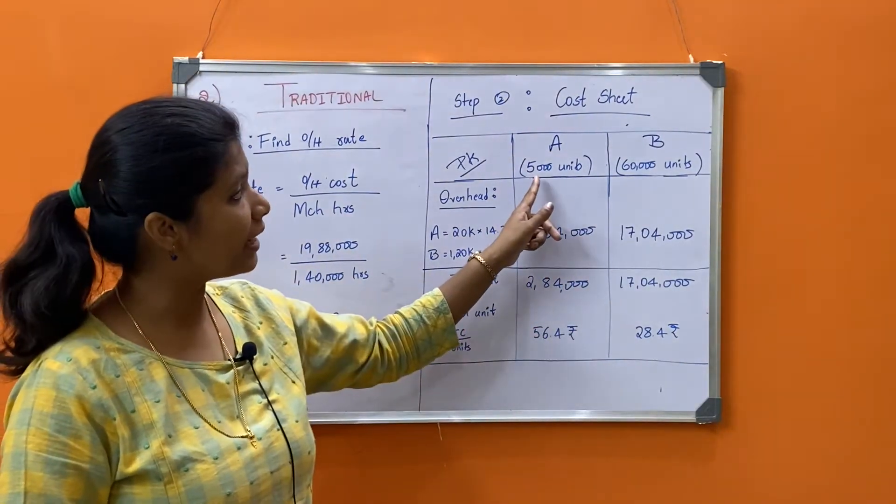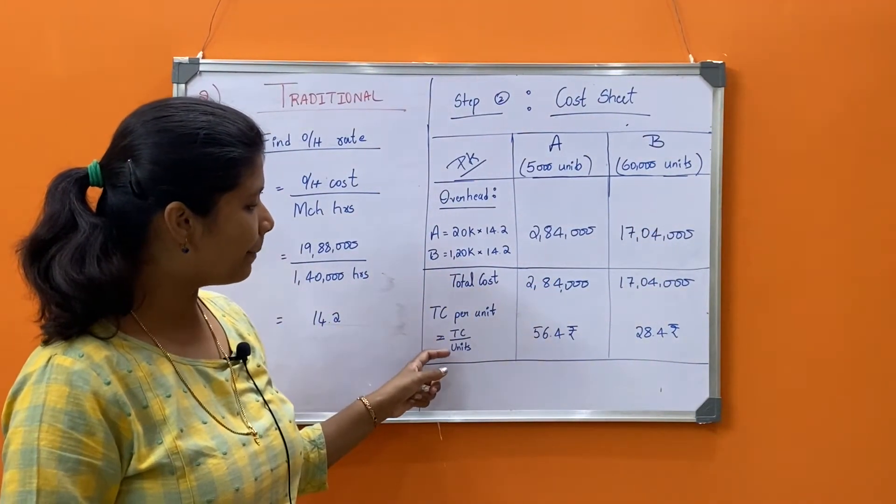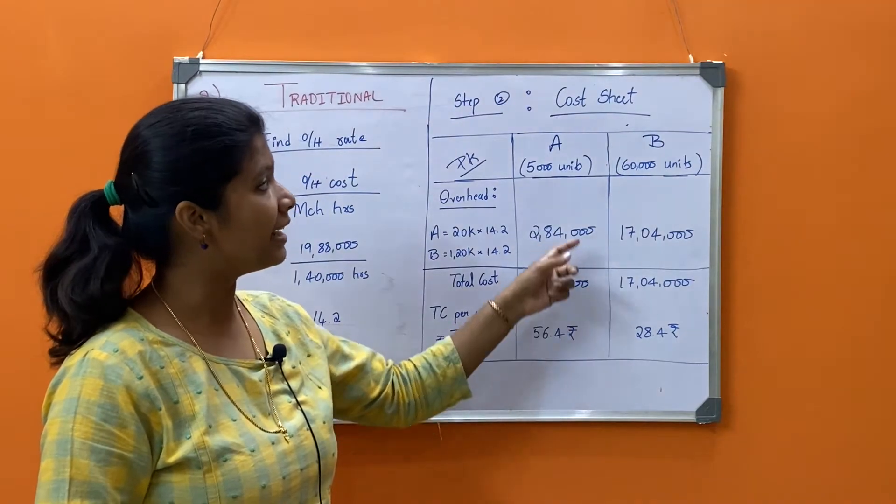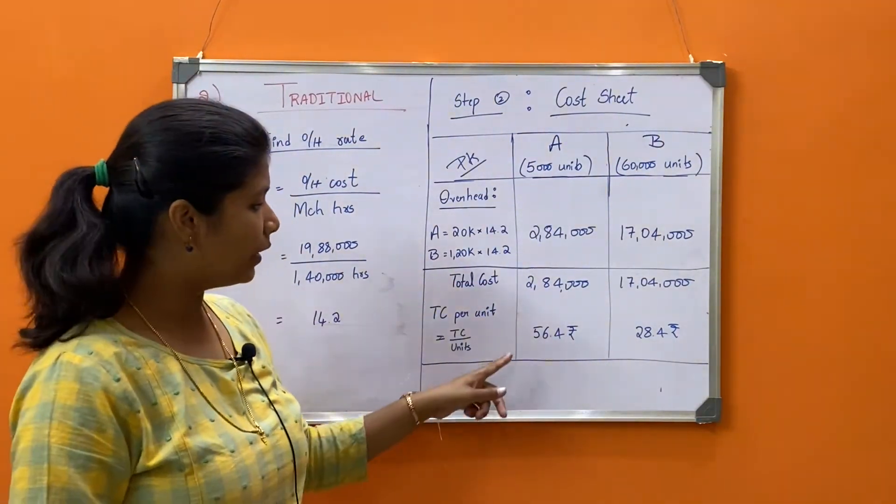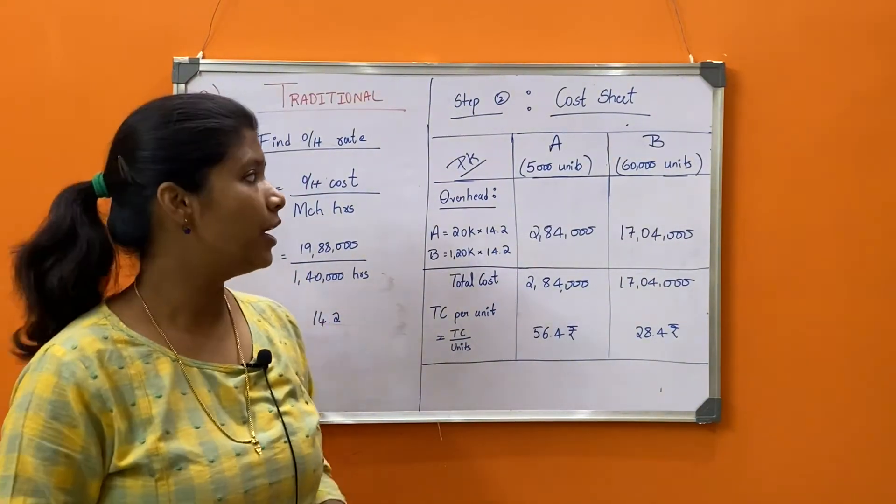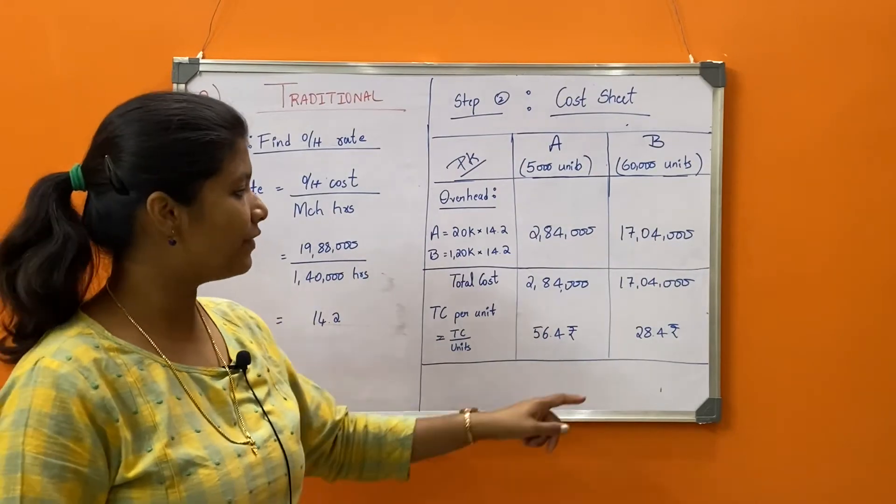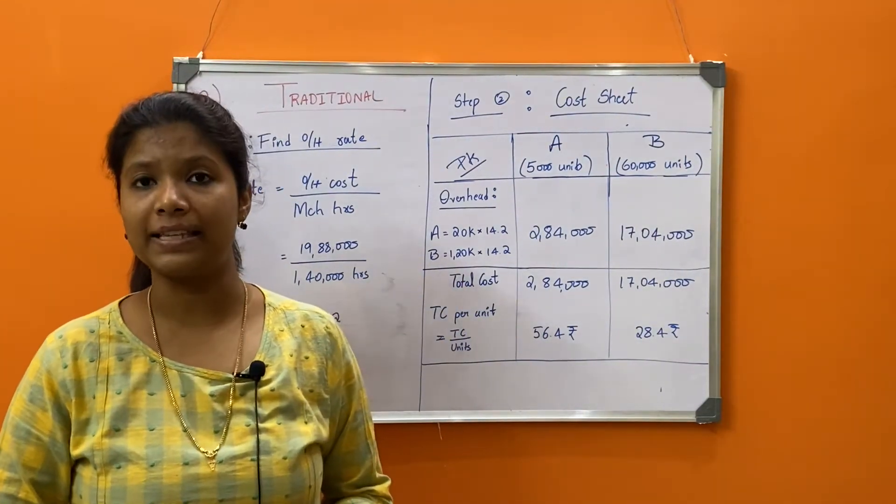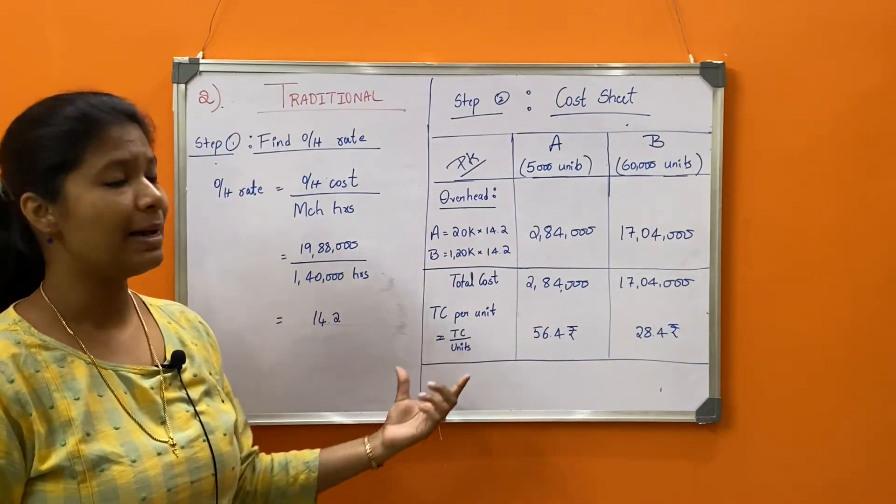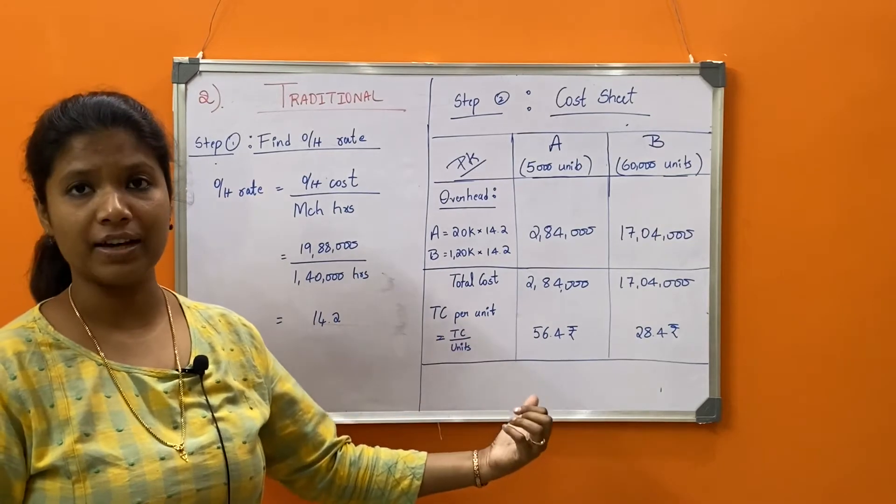We need to find out the total cost per unit of each product. We know the cost and we know how much A and B produced, so we simply divide total cost by number of units the product has produced. Under A, 2,84,000 divided by 5,000 units gives a cost of 56.8 rupees per unit. For product B, 17,04,000 divided by 60,000 units gives 28.4 rupees per unit. This is under traditional method: find the overhead rate, multiply with machine hours, and divide by number of units produced. That completes the first method.